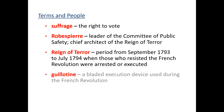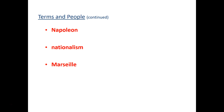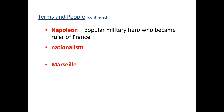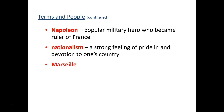The guillotine is the bladed execution device used during the French Revolution to behead approximately 17,000 people suspected of being against the Revolution. Napoleon Bonaparte, popular military hero, becomes the ruler of France, selected by the Directory — we'll talk about Napoleon and his rise and fall in the next section. Nationalism is the pride and devotion to one's country and, by extension, the willingness to defend it.